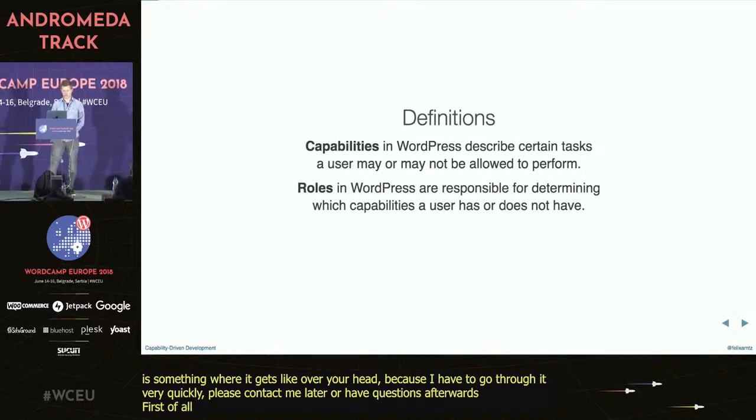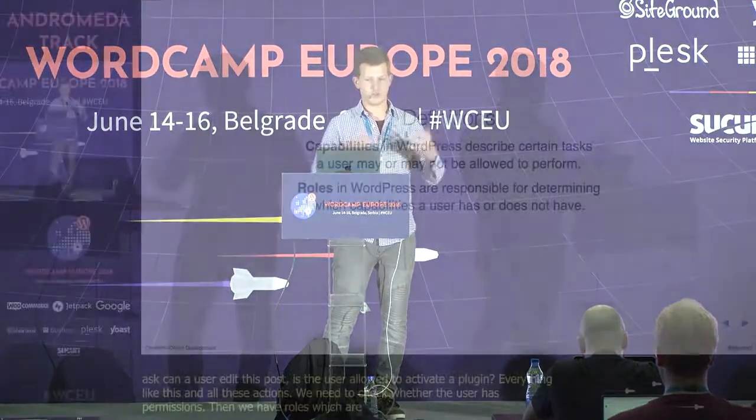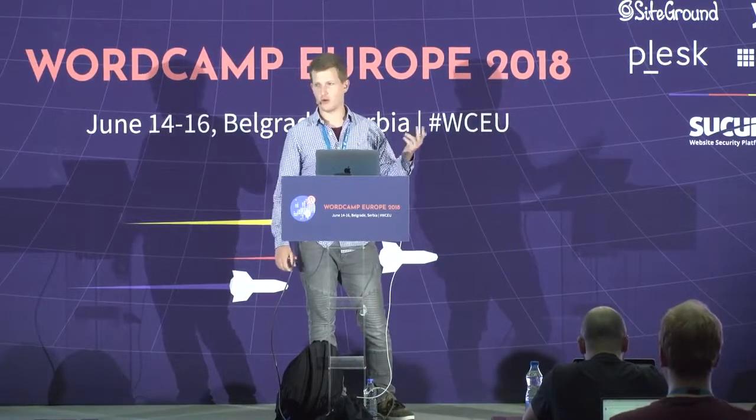Definitions. What are capabilities? Capabilities in WordPress describe tasks that a user may or may not be allowed to perform. For example, can a user edit this post? Is a user allowed to activate a plugin? All these actions require checking whether the user actually has permissions. Then we have roles, which are a more visually represented concept because they are exposed in the admin interface. We're probably all familiar with the different roles WordPress provides out of the box: administrator, editor, author, contributor, subscriber. All these roles are basically a set of capabilities, and by giving a user a certain role, you indirectly give that user a set of capabilities determined by that role.